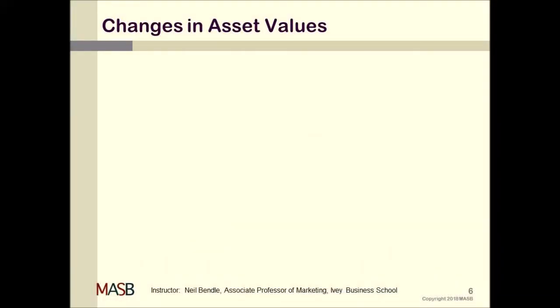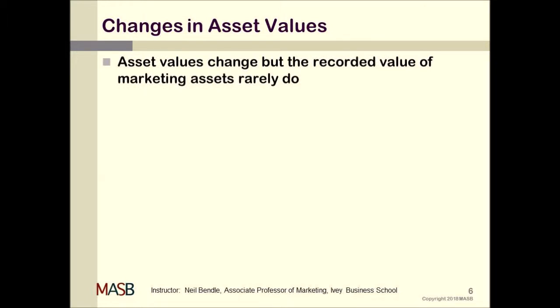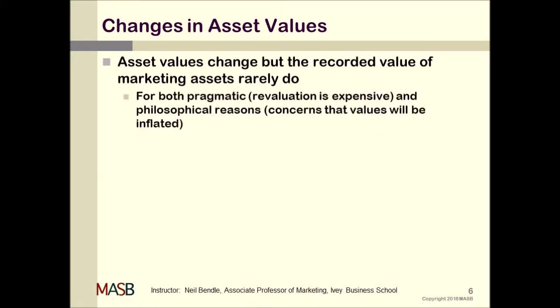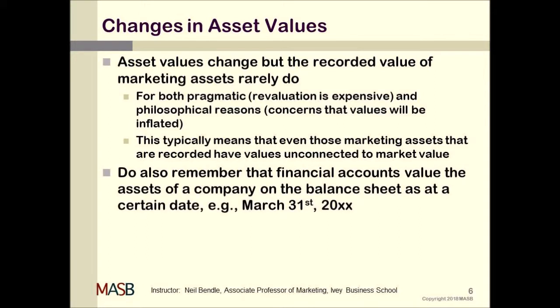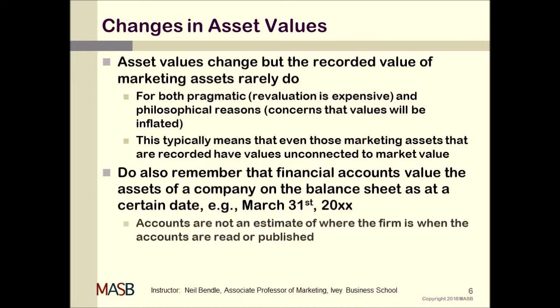One thing that's also a problem is that the values of marketing assets in the accounts change over time, but the accounts are very reluctant to change them, partly because it's hard to measure the differences. Pragmatic concerns suggest you often put a number in there and leave it the same forevermore. This can lead to some pretty bizarre numbers — historical numbers about what, say, a brand might have been bought for — but it doesn't really bear any relationship to what the brand's worth now. Always remember that when you see asset values, they are assets at a certain date. If the accounts are dated 31st of March 2019, and you're reading them in 2020 or later in 2019, the numbers might be very different.